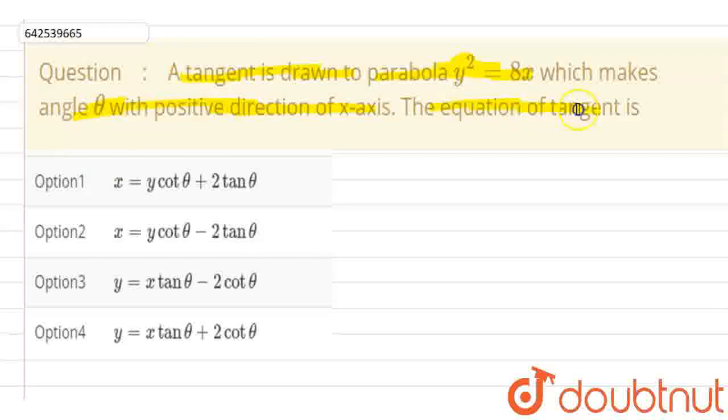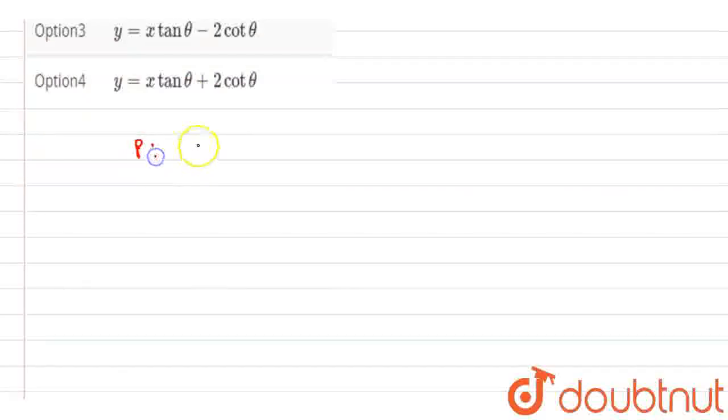So basically we have given that parabola equation, this is our parabola equation y square equal to 8x and we know that the standard equation of parabola is basically y square equal to 4ax. So from here we have to compare this 8 and 4a.